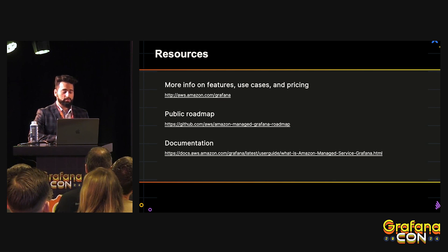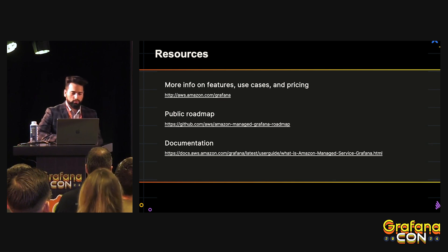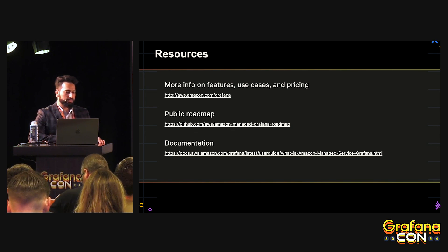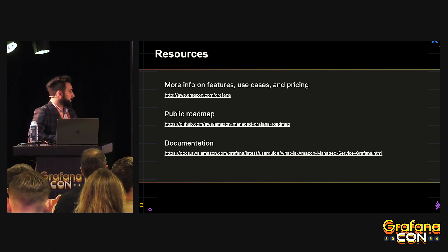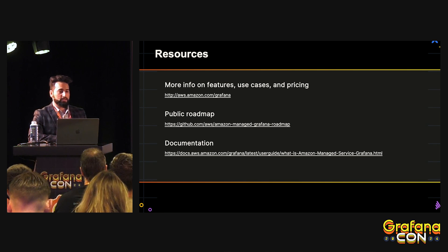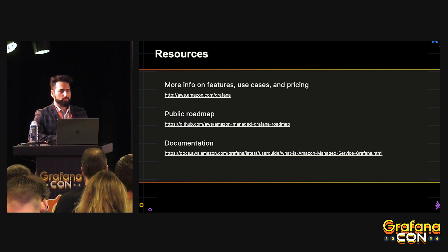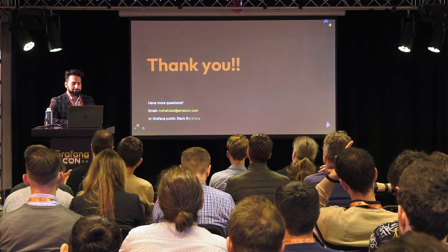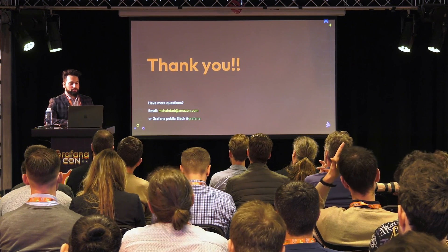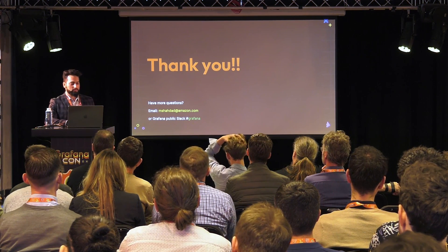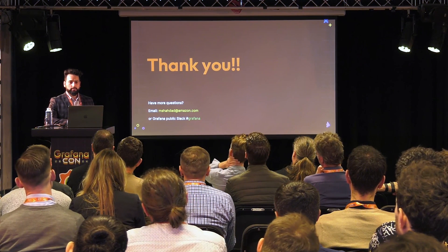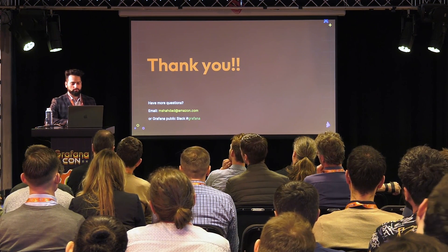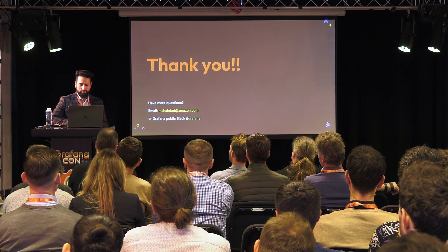I'll leave you with these resources. The first is the Grafana documentation, and the second is the public roadmap that AWS has published, where you can have full transparency over whenever new services or new features are to be added. There's also a documentation link. Thank you for your attention — if you have any questions, I will be here. You can also reach out to me on my email or via the Slack community for Grafana.